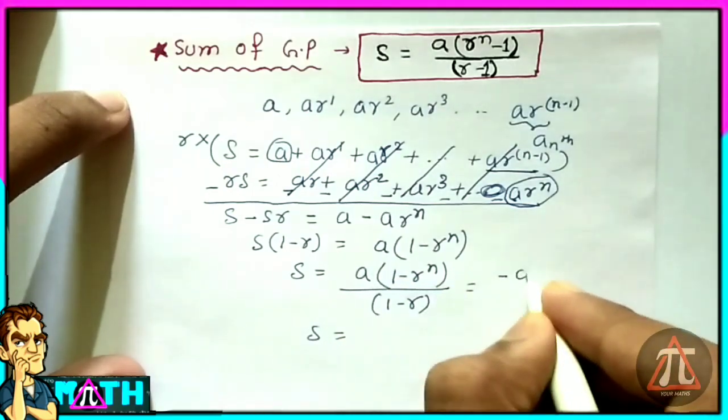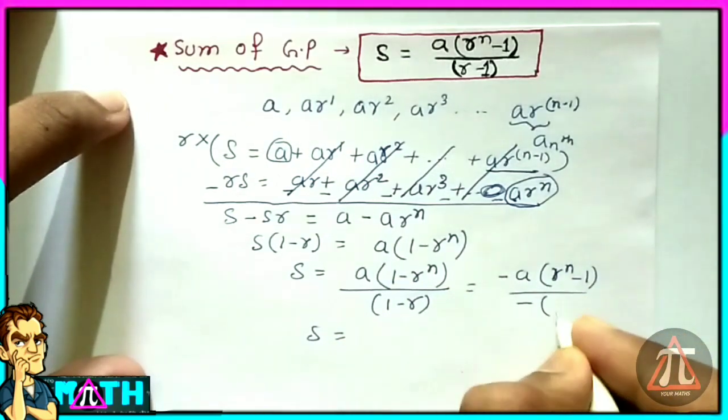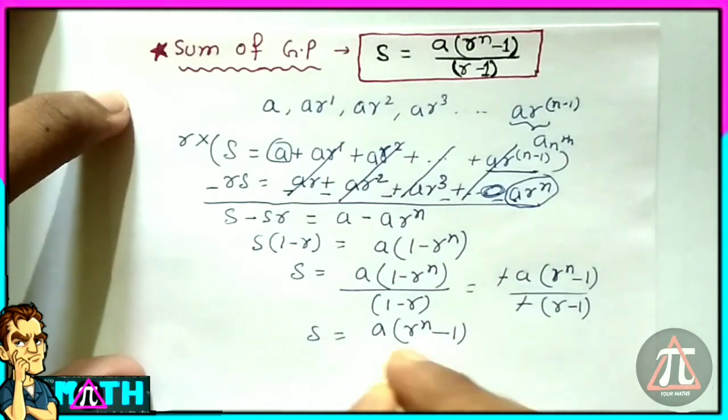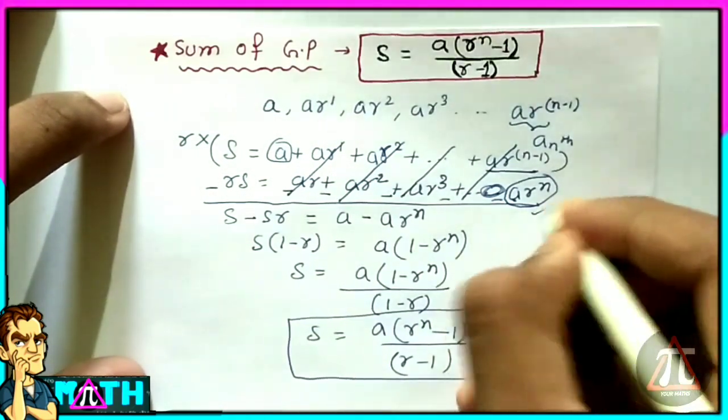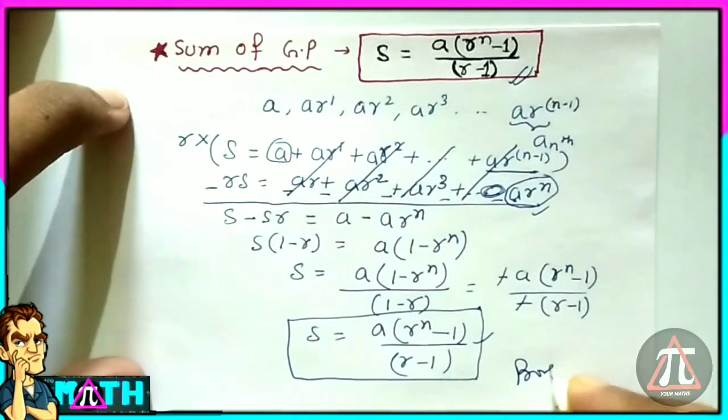Now take negative one common from numerator and denominator and it cancels out, and it becomes a(r to the power n minus 1) divided by (r minus 1). Hence proved. Hopefully you get it.